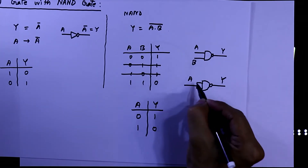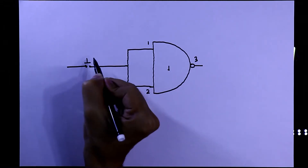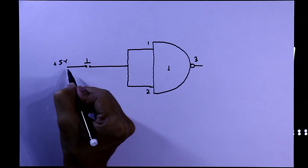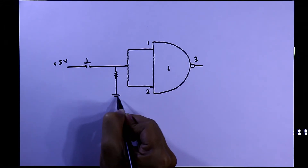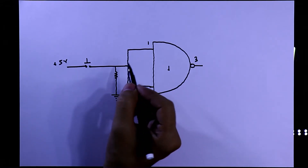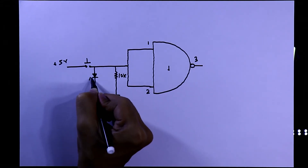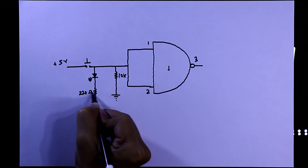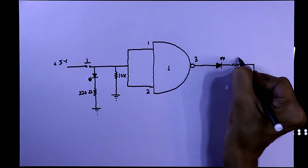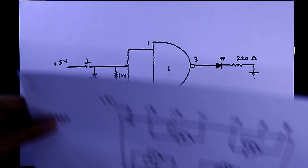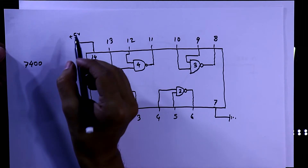According to the theory, we have to short both the inputs. We will connect a push button switch, and the other side of the switch we will connect to plus 5 volts to get a high signal. With this input we will connect a pull-down resistor of 10 kilo ohms. To see the input we will connect an LED with a 220 ohm resistor connected to ground. At the output we will also connect an LED with a 220 ohm resistor connected to ground. Pin 7 is connected to ground and pin 14 is connected to plus 5 volts.